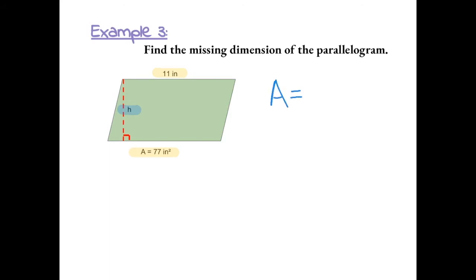Area equals base times height and fill in the given information. We're given the area which is 77 inches squared equal to the base which is 11 inches times the height, which we don't know. So we're going to leave that as a variable. Now we can solve using inverse operations to solve for our height.